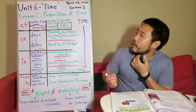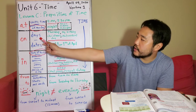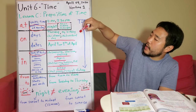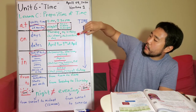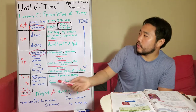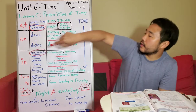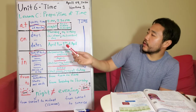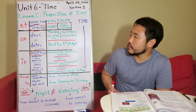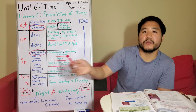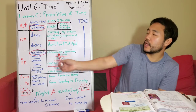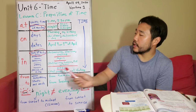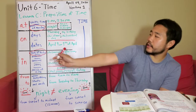For "on," it is used for days and dates. Examples for days are: Thursday, my birthday, Christmas day, weekend. When we use "on," we say: on Thursday, on my birthday, on Christmas day, on the weekend. Note that you have to say "on the weekend." For dates, it's simple. Let's use today's date: April 9th, or another way of saying this is the 9th of April. So we say: on April 9th, or on the 9th of April.